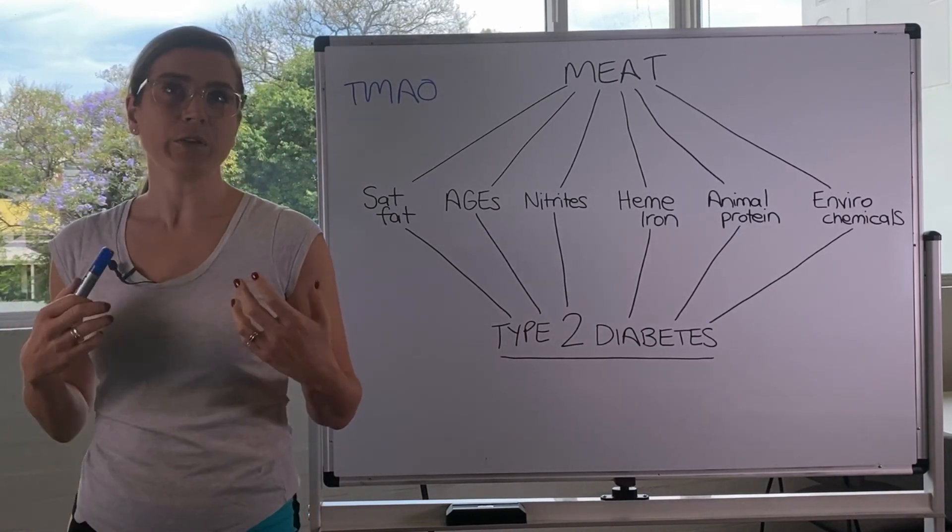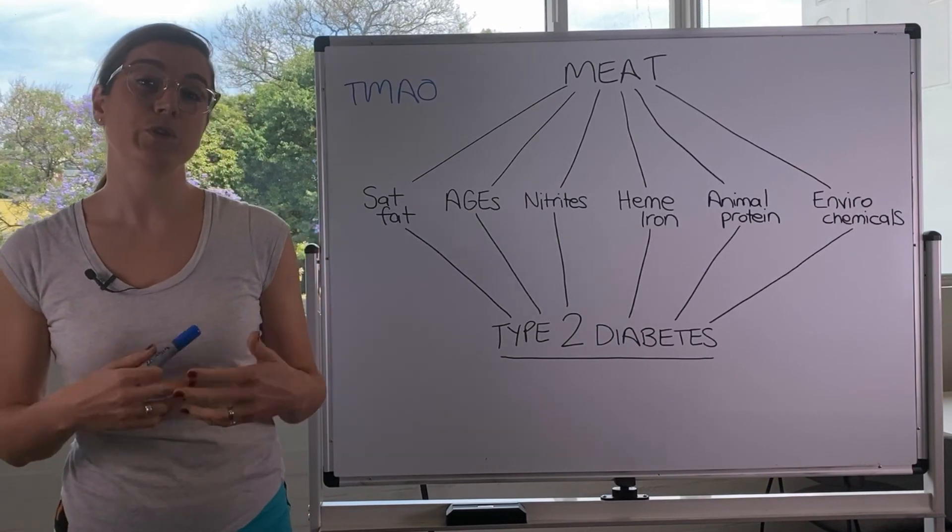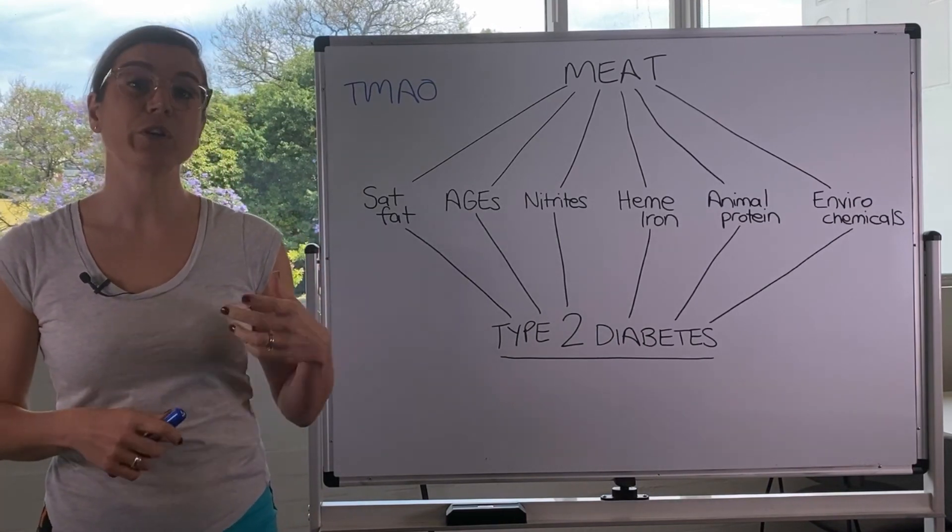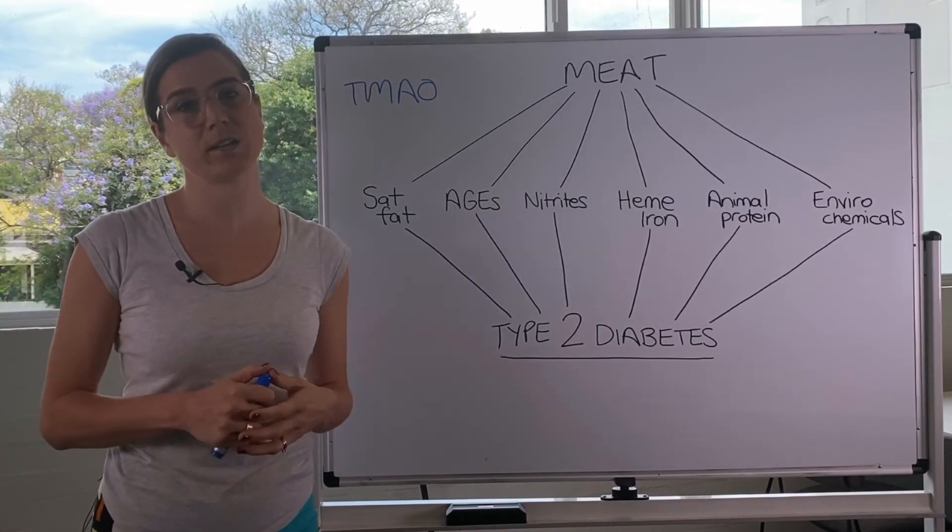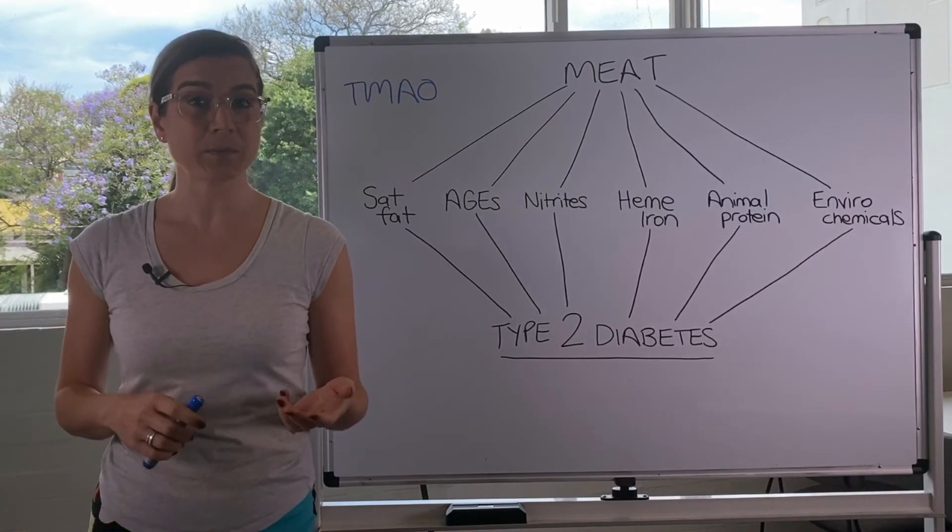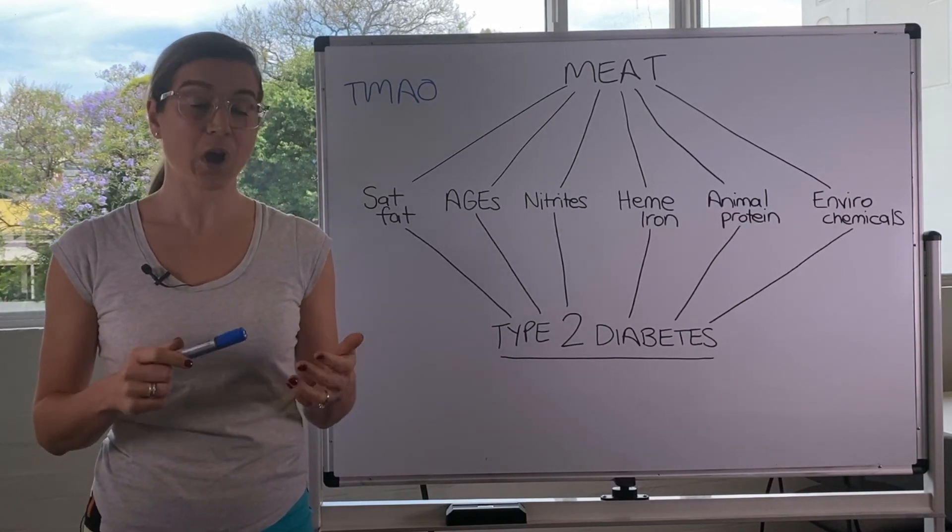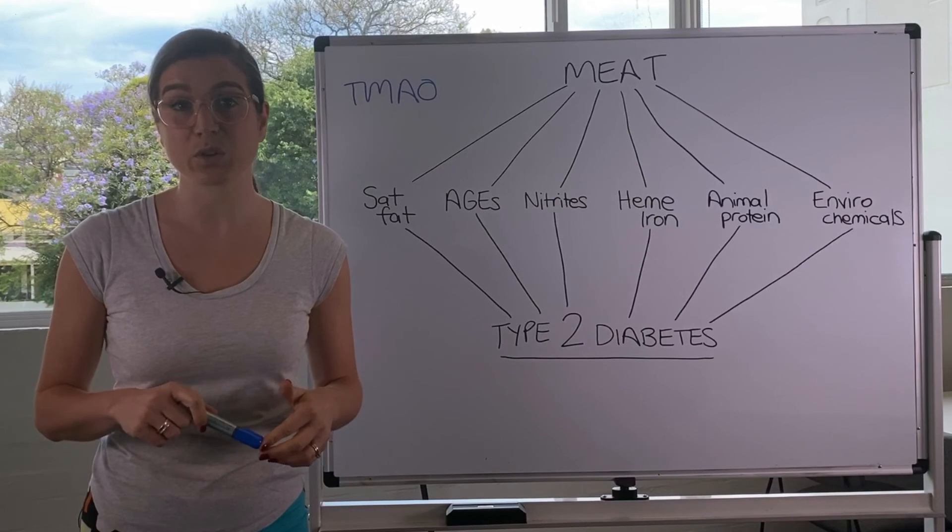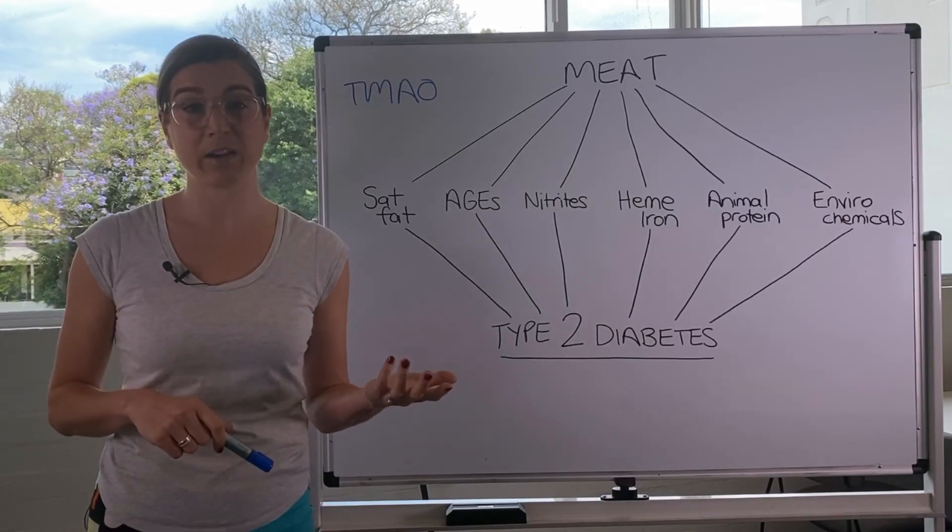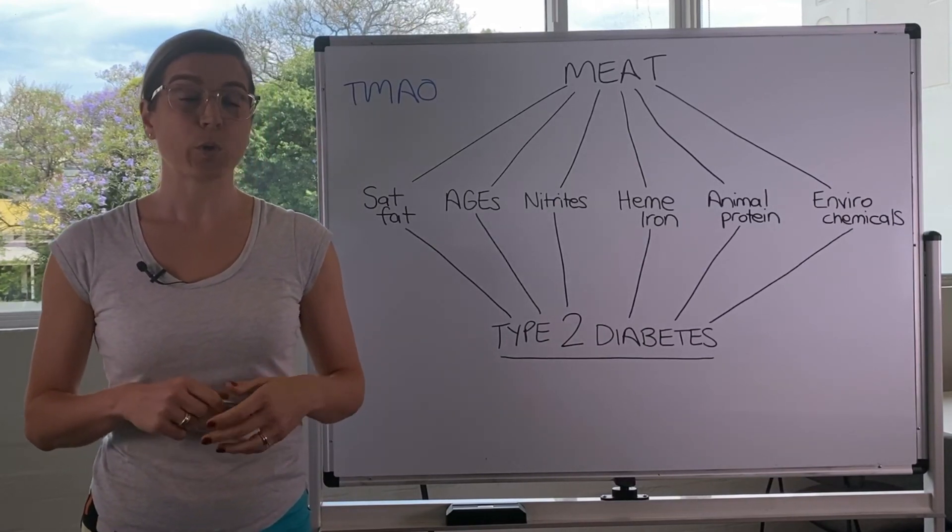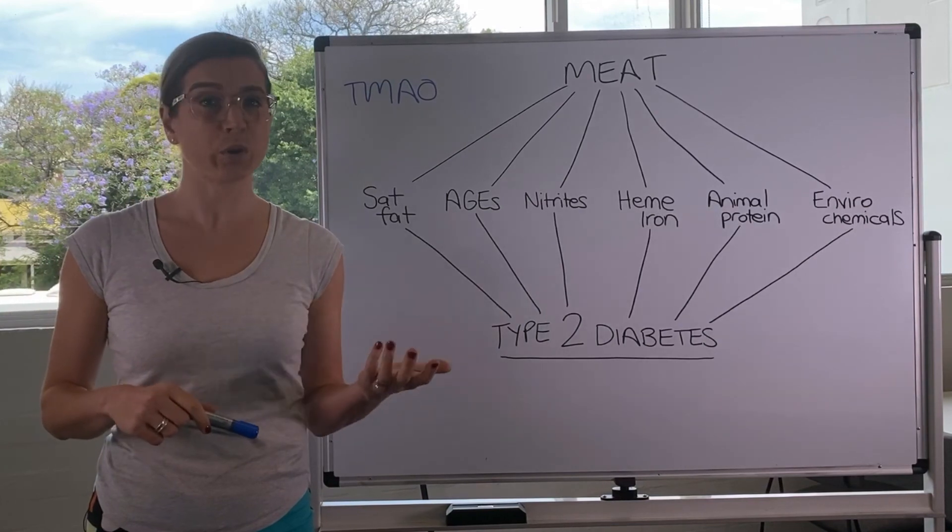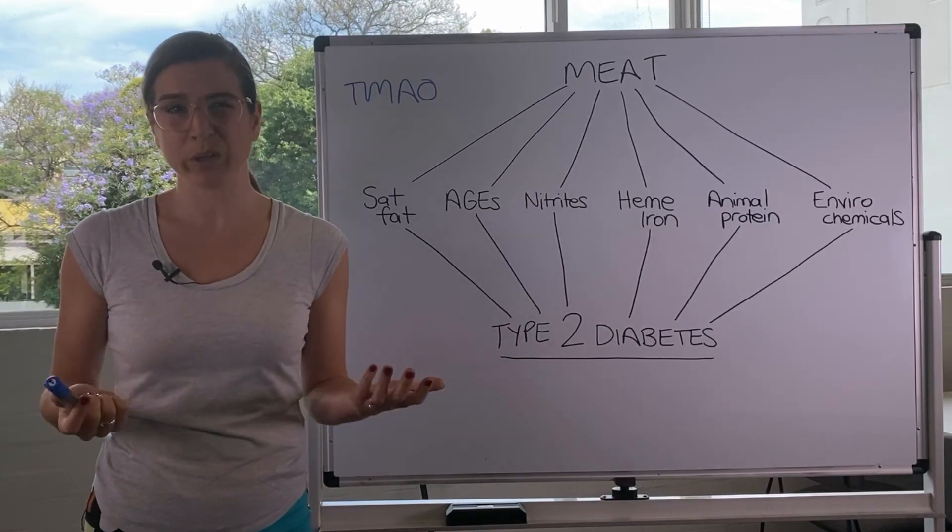So if you are replacing or reducing your meat consumption, what you replace it with is just as important. Because if you replace meat with things like highly refined or processed grains, basically anything made from flour or sugar, or other processed oils or just processed foods in general, then you're really no better off.